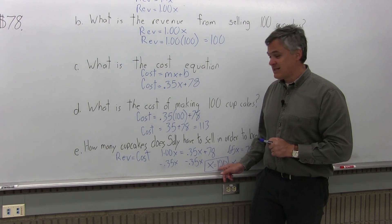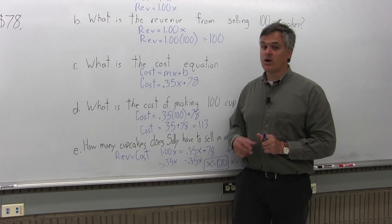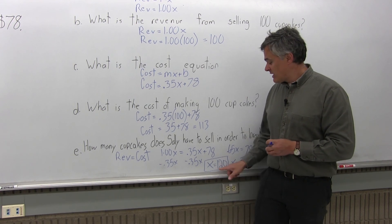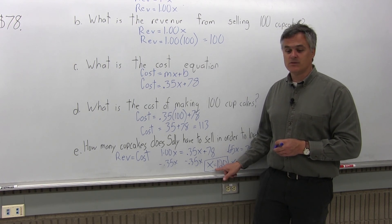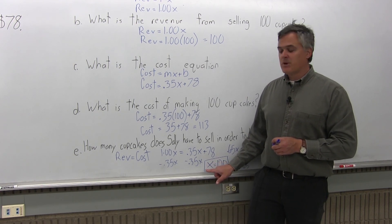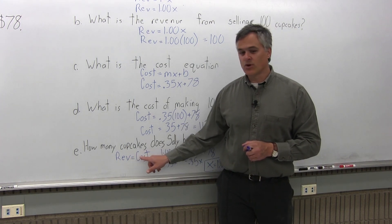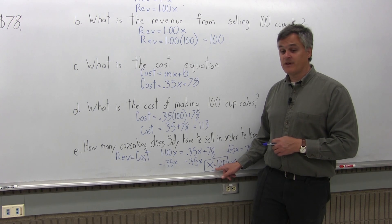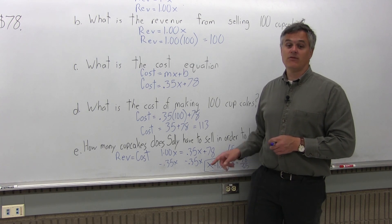So if realistically Sally's going to sell 150, that's probably not worth it. She'd want to sell maybe like 400 or more. But it gives you a goal to shoot for. At 120 cupcakes, the revenue would equal the cost and you would break even. And as you sell more, you make a profit. Less than 120, you would have a loss.